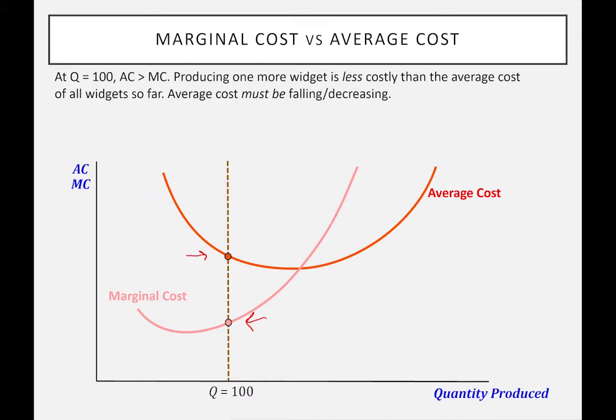Necessarily, then, the average cost curve must be decreasing because the next widget the firm produces is going to be less costly than all the widgets up to that point.